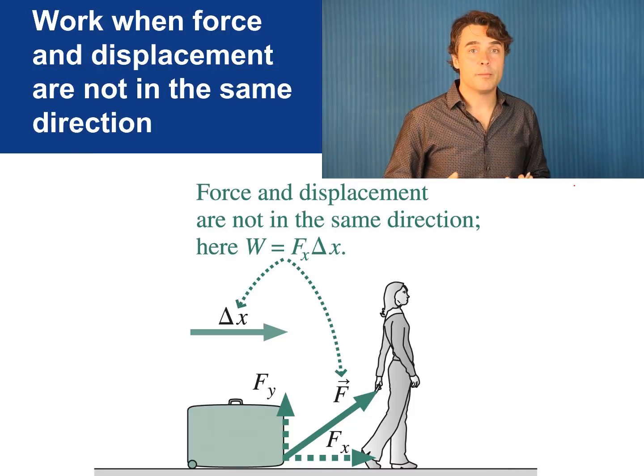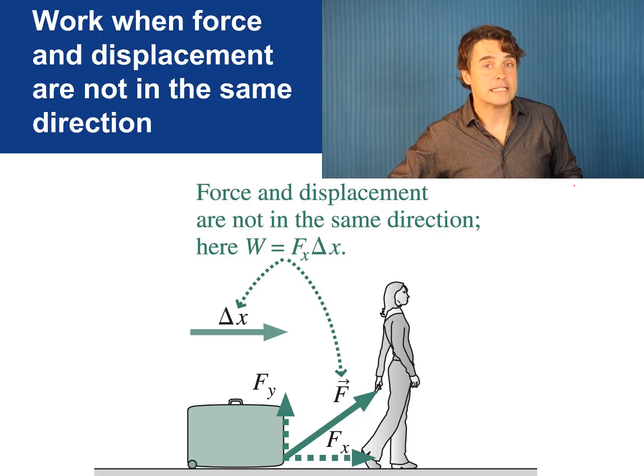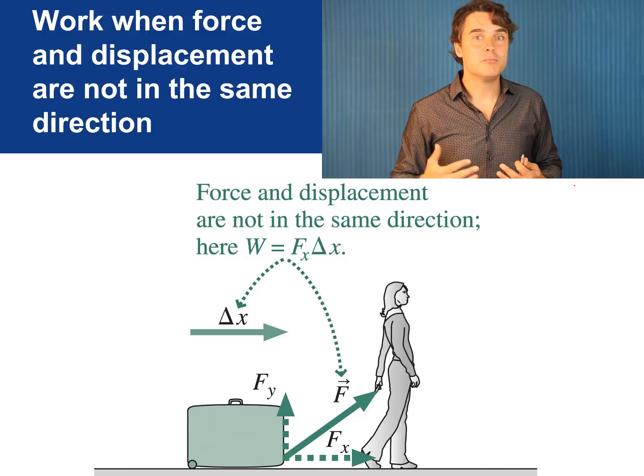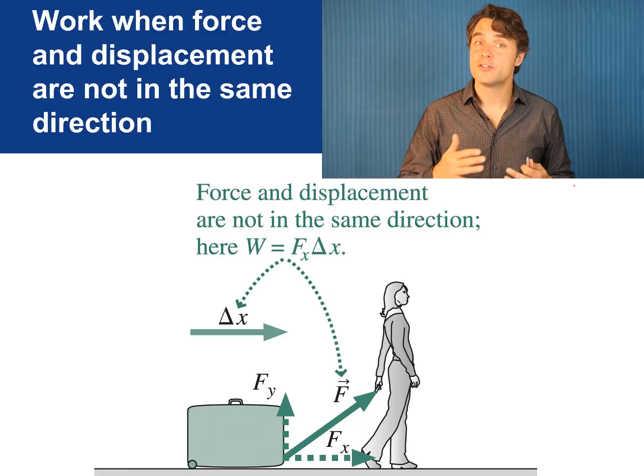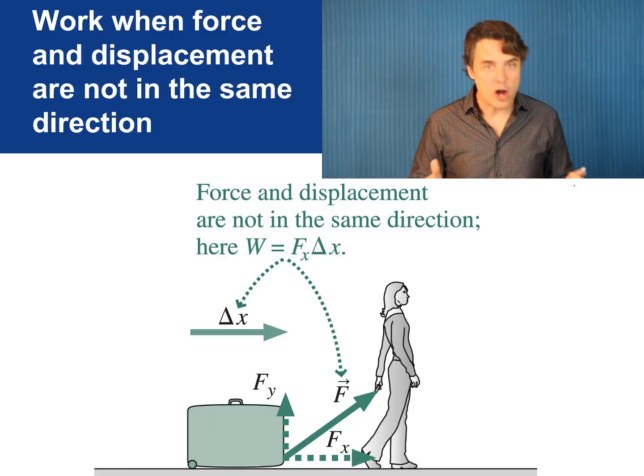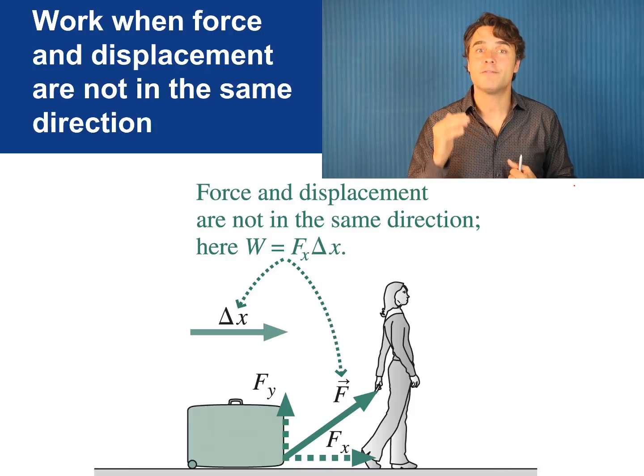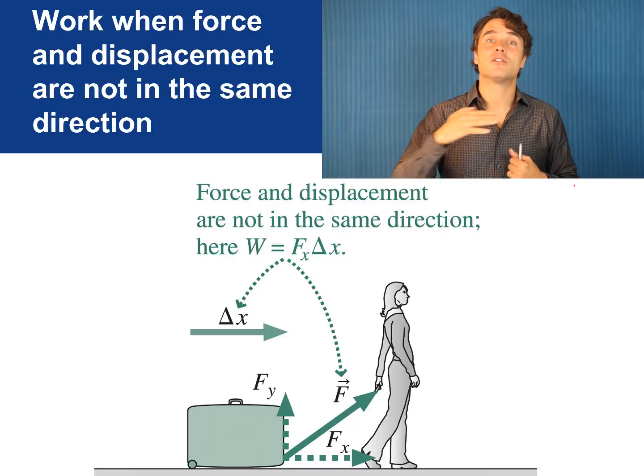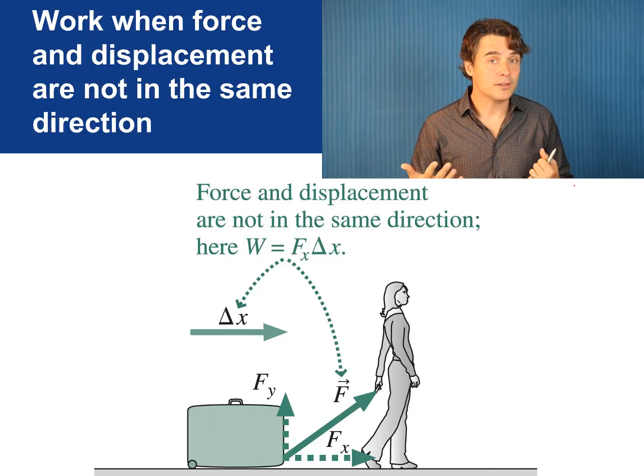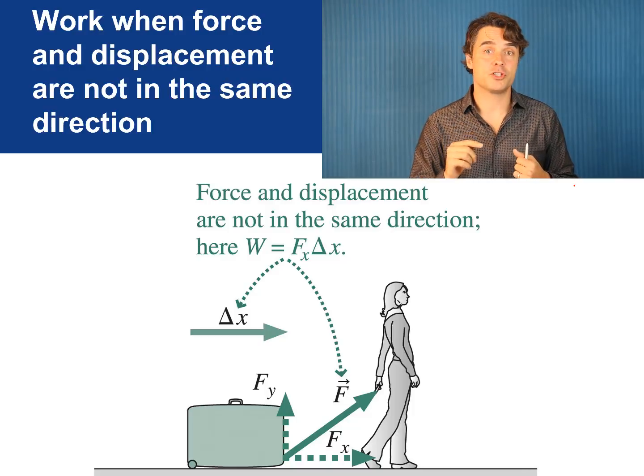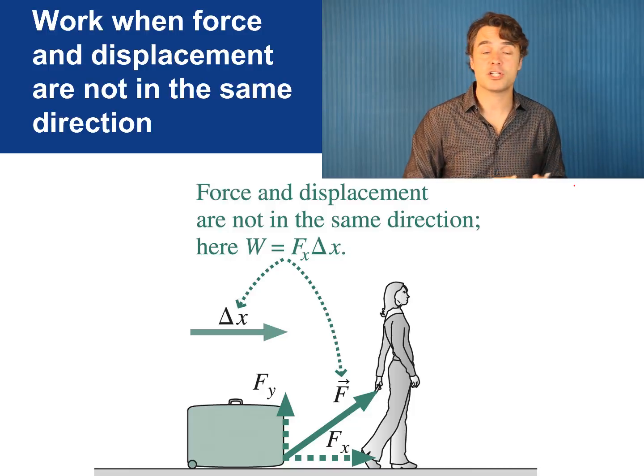Here is a woman pulling her suitcase in the airport. The force she applies is at a diagonal but the suitcase moves exactly sideways in the x direction so the force and the displacement are not in the same direction. In this case it is only the component of the force she applies in the direction of the displacement that does any work. So the work is the x component of the force she applies to the suitcase times the displacement of the suitcase in the x direction delta x.